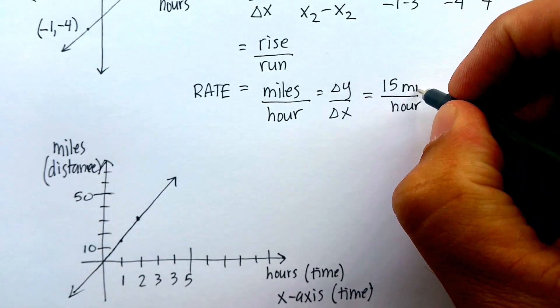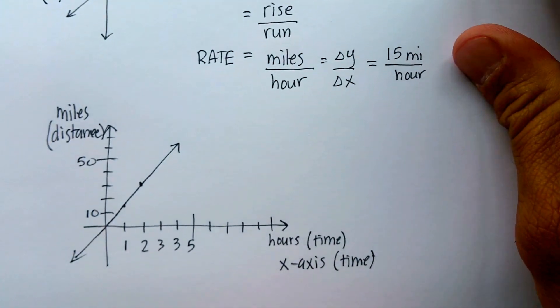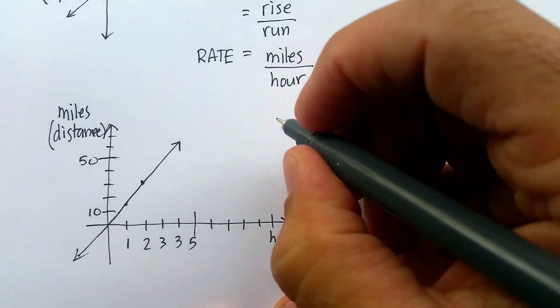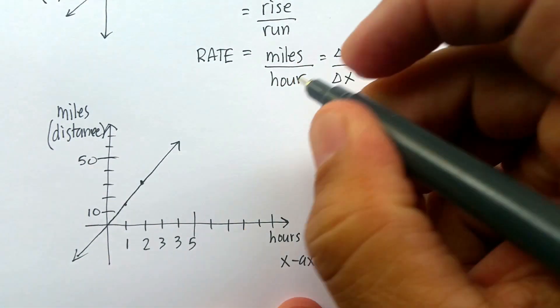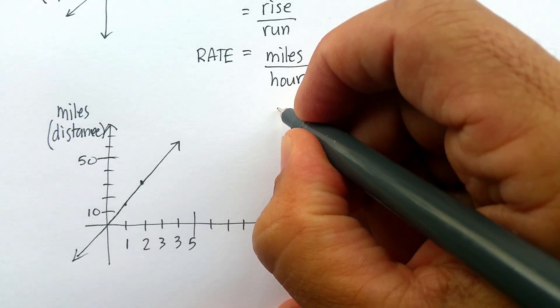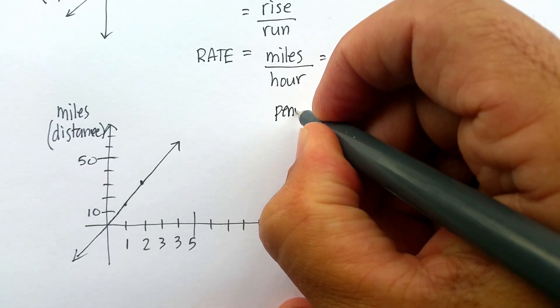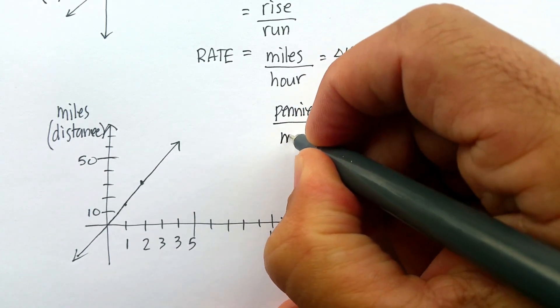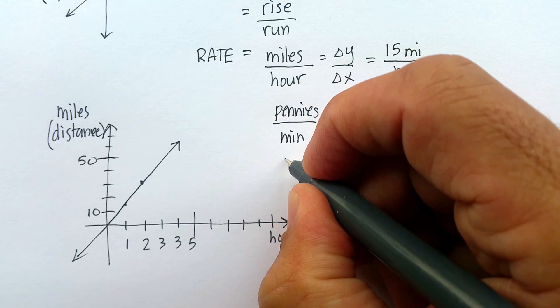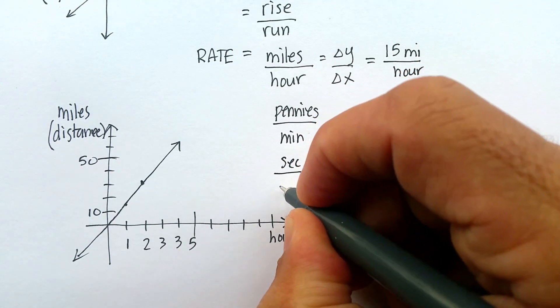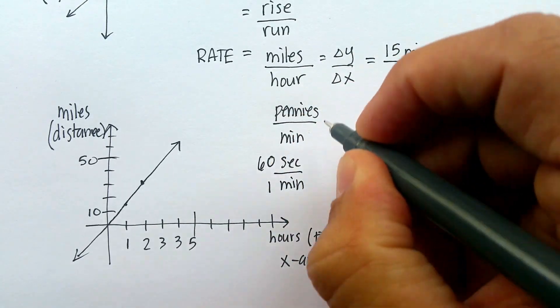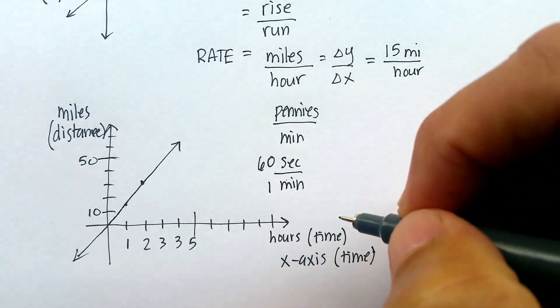And again, that would be called a rate of change. So remember that whatever you have, whether it's miles per hour, whether it's something like, I don't know, something per second, pennies per minute, something like that, per minute, whether it's something like seconds per minute. You know, we know that 60 seconds is one minute, for example. Those would all be rates of change.